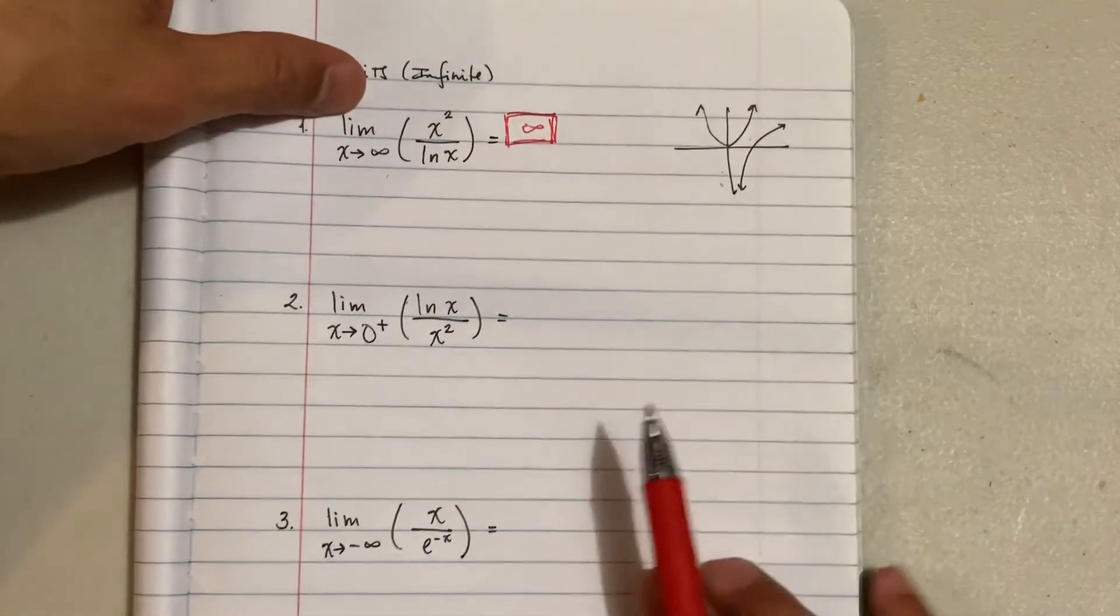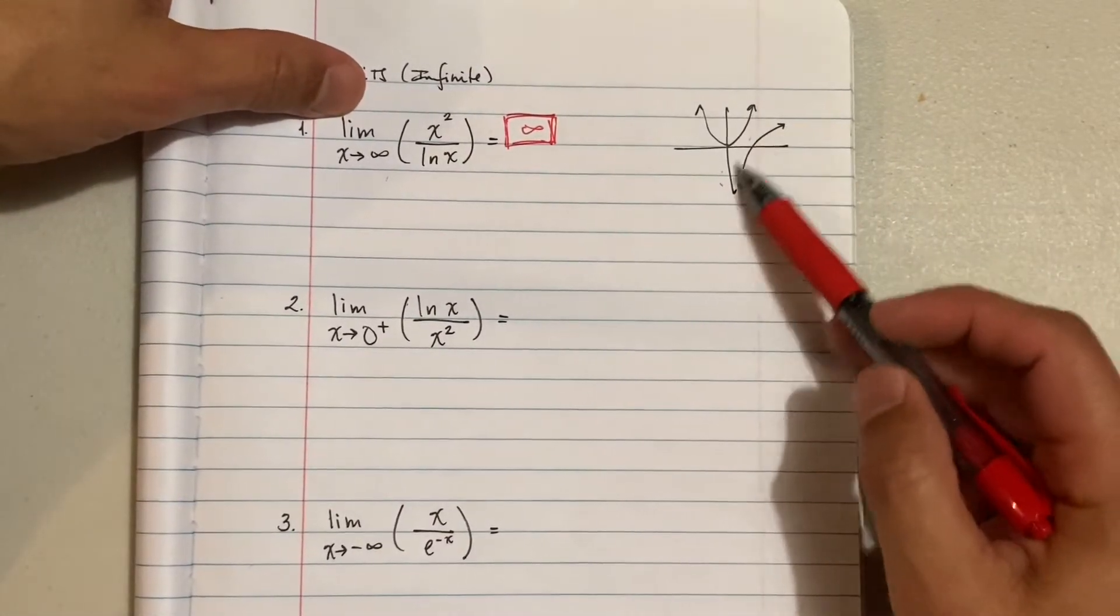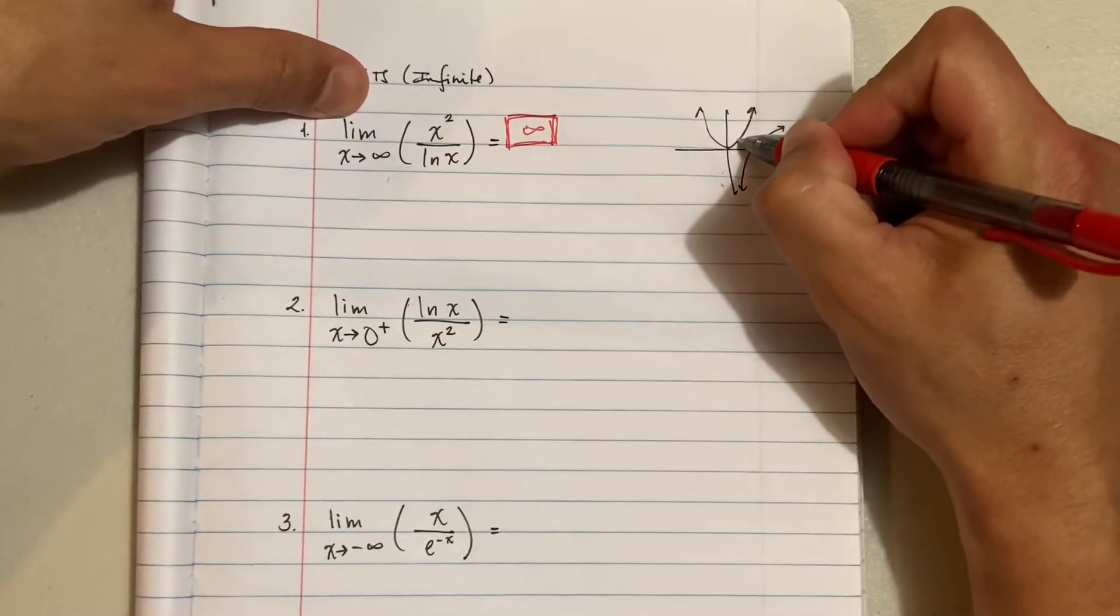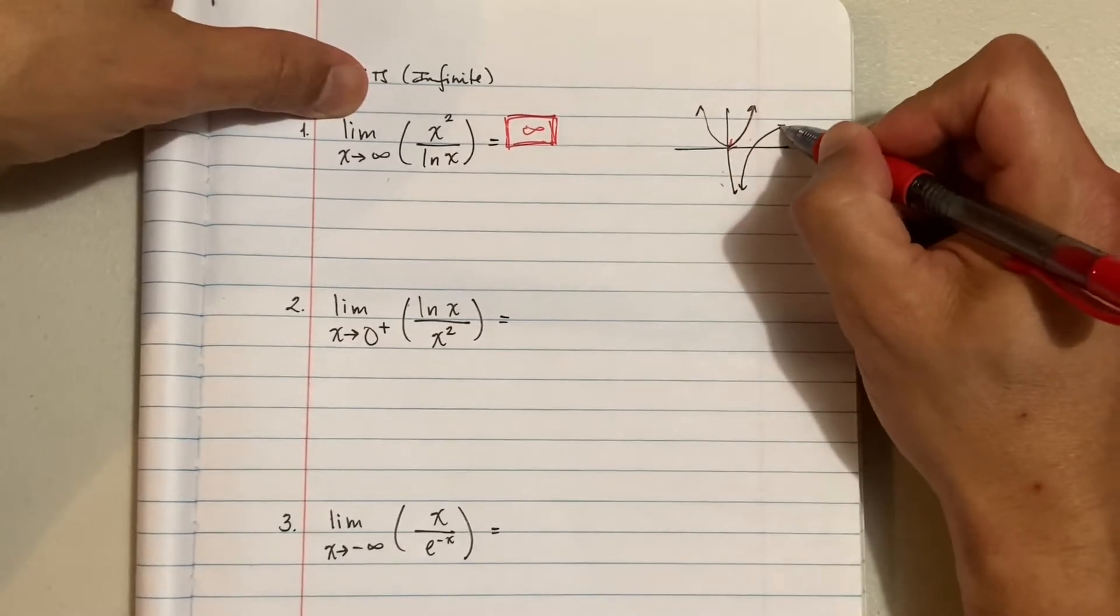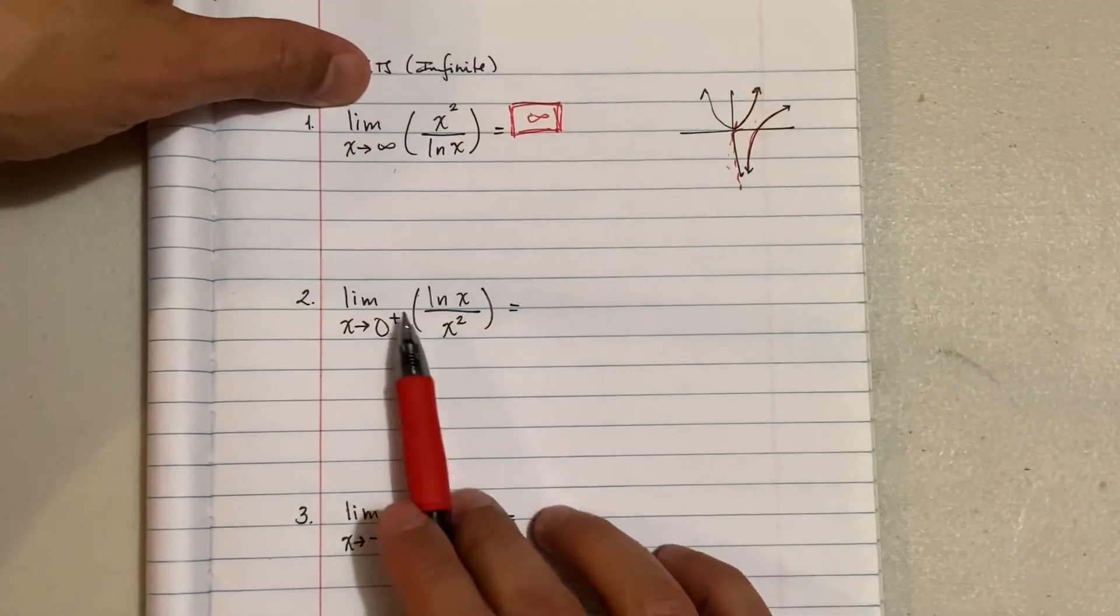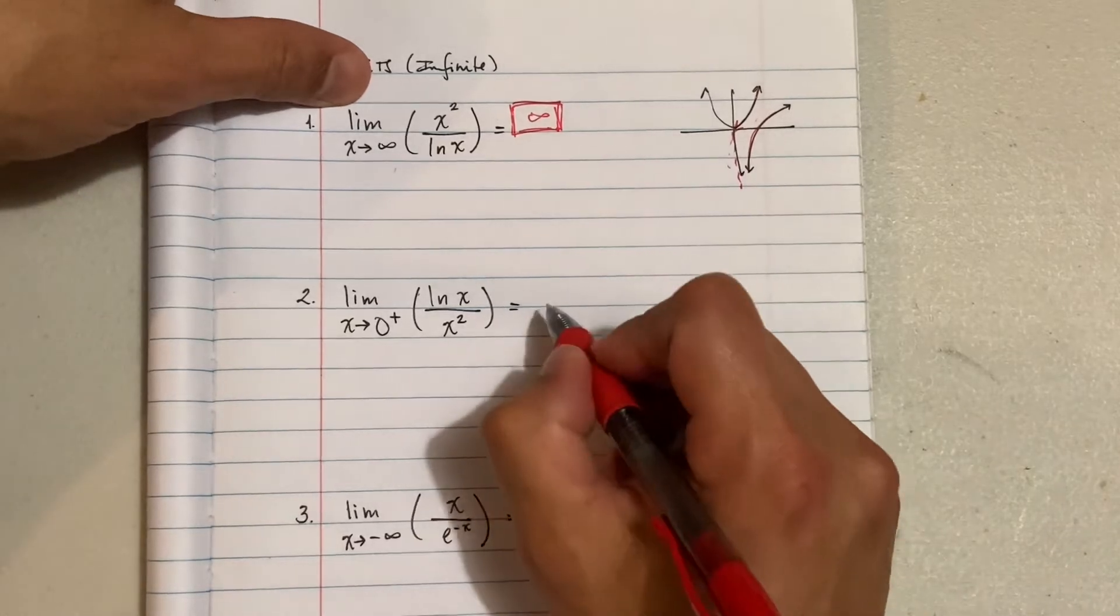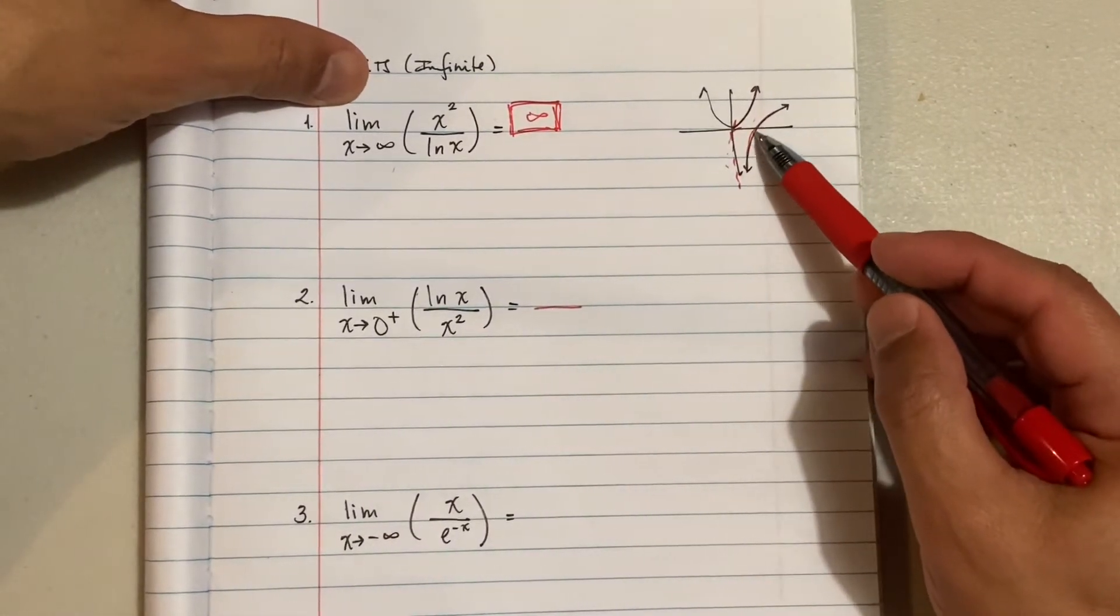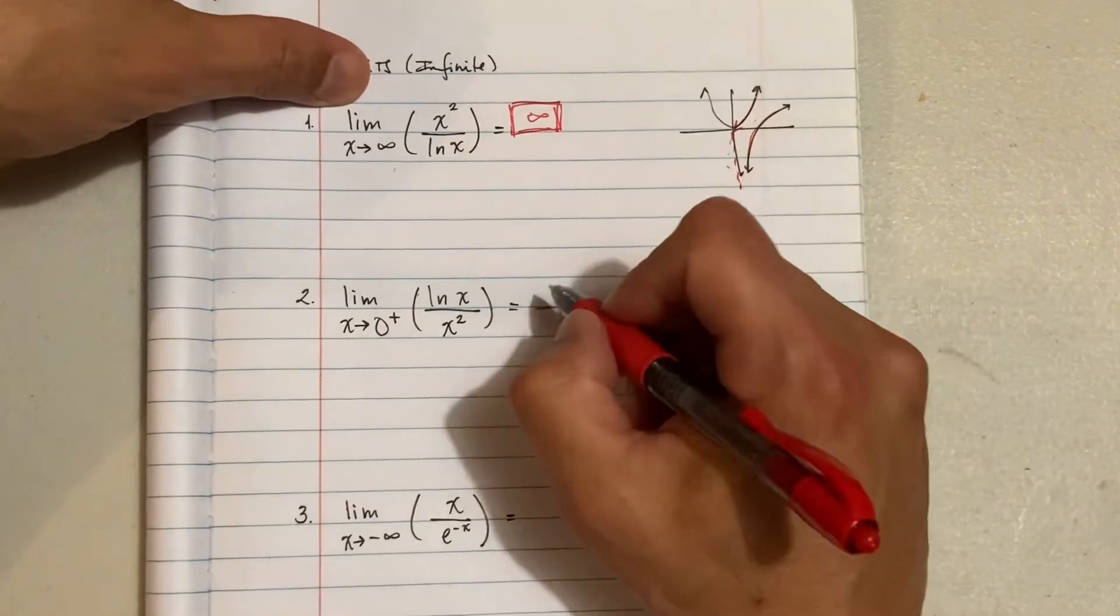X approaches zero from the right side. And we're going to go ahead and use this guy here. So what's happening? We still have our x squared. We still have our ln of x. And so we're actually going this way. We're going downward. All right. Remember the ln of x has the asymptote. So over here, what's happening? The ln of x is approaching what? Negative infinity. That's right.